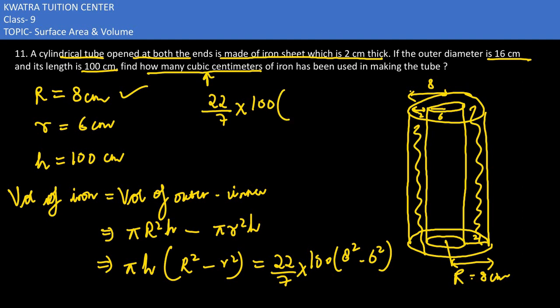(22/7) × 100 × 28. Since 28 divided by 7 is 4, we get 22 × 4 × 100 = 88 × 100 = 8800 cubic centimeters.